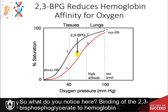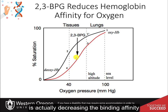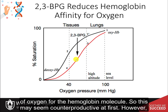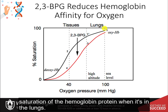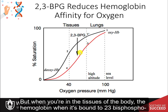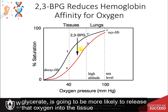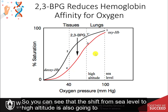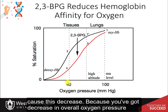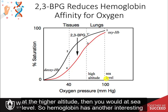Binding of 2,3-bisphosphoglycerate to hemoglobin actually decreases the binding affinity of oxygen for the hemoglobin molecule. This may seem counterproductive, but the pressure inside the lungs is still high enough to achieve good hemoglobin saturation there. In the tissues, however, hemoglobin bound to 2,3-BPG is more likely to release oxygen into the tissue — which is exactly where it needs to be delivered, especially when less oxygen is available. The shift from sea level to high altitude also decreases overall oxygen pressure, reinforcing this adaptive mechanism.